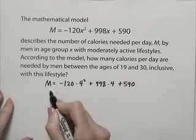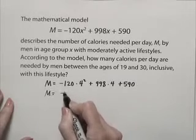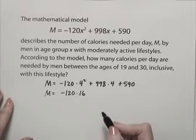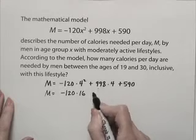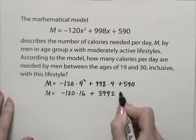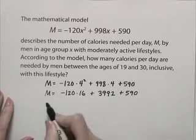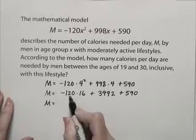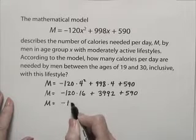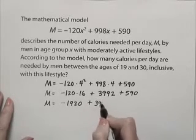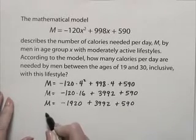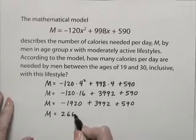Using order of operations, M equals negative 120 multiplied by 16 — evaluating the exponential expression first — plus 998 times 4, which is 3,992, plus 590. Performing the multiplication of negative 120 times 16 gives us negative 1,920 plus 3,992 plus 590. Evaluating this sum gives us M equals 2,662.